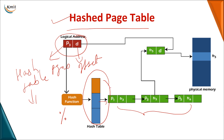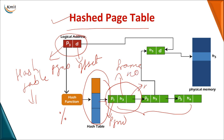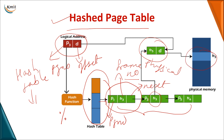The hash table output links to a linked list. Each node in the linked list contains three parts: the page number, the frame number, and a pointer to the next node. The input page number is compared with page numbers in the linked list; when a match is found, the corresponding frame number is retrieved. That frame number combined with the displacement gives the physical address used to fetch data from memory.